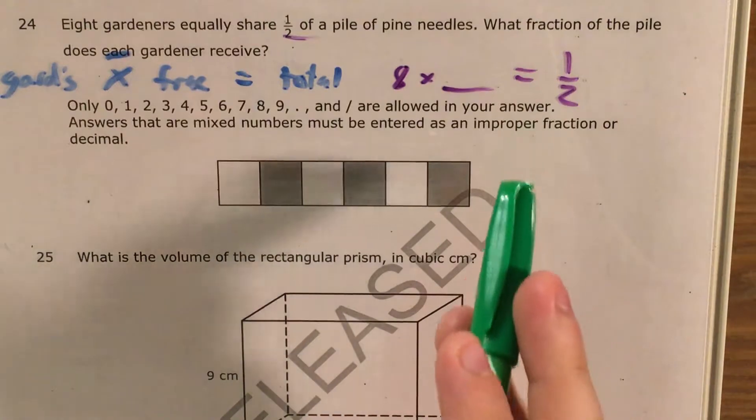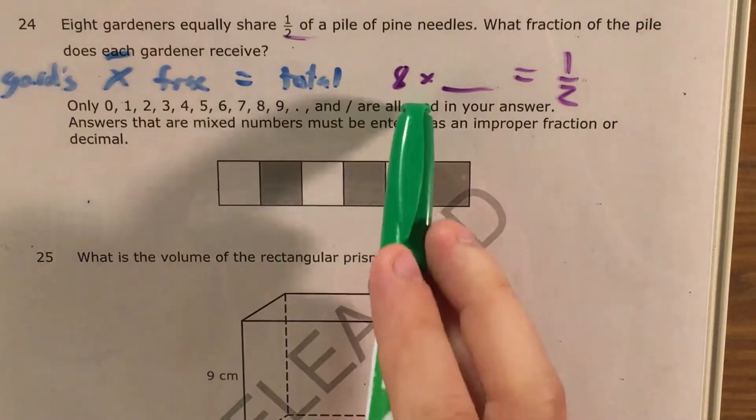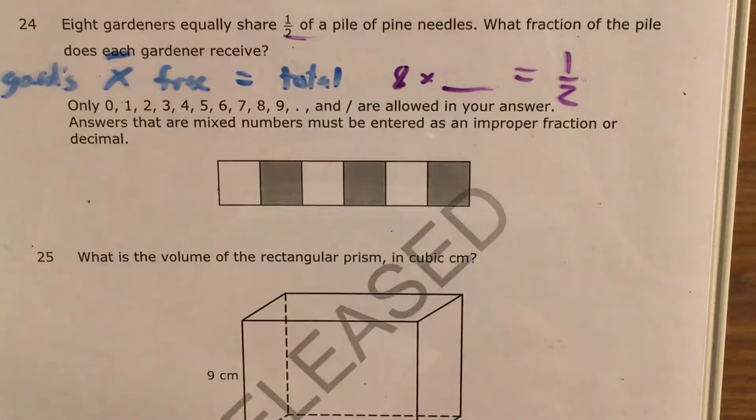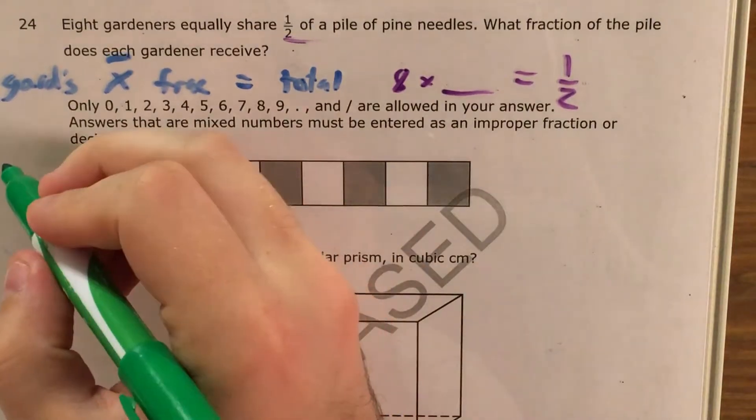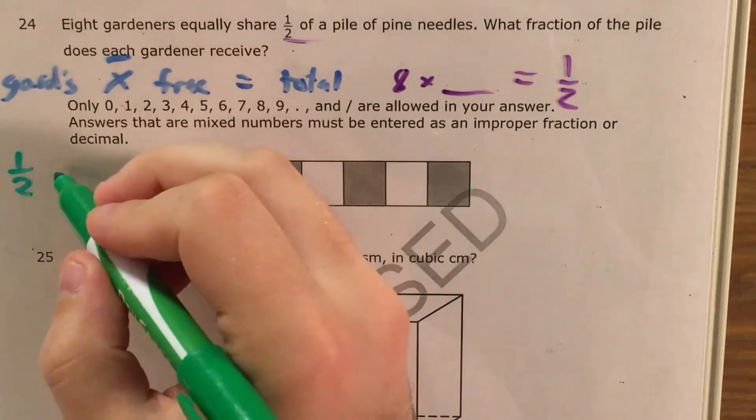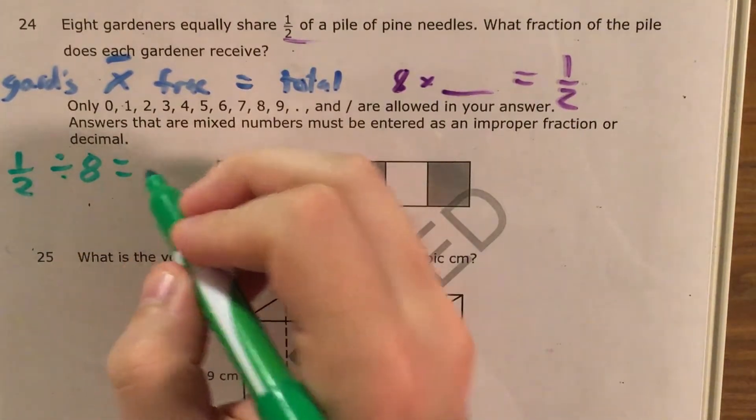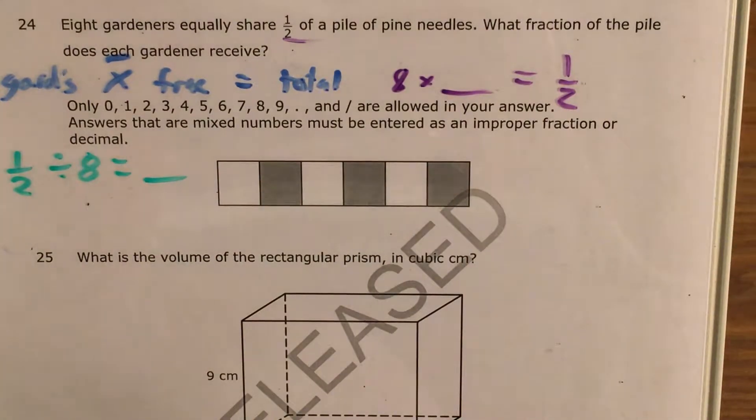At this point, I'll use fact families. If 8 times something equals one half, then one half divided by 8 equals that same unknown number. This brings us to the second skill needed for this question: dividing a fraction by a whole number.